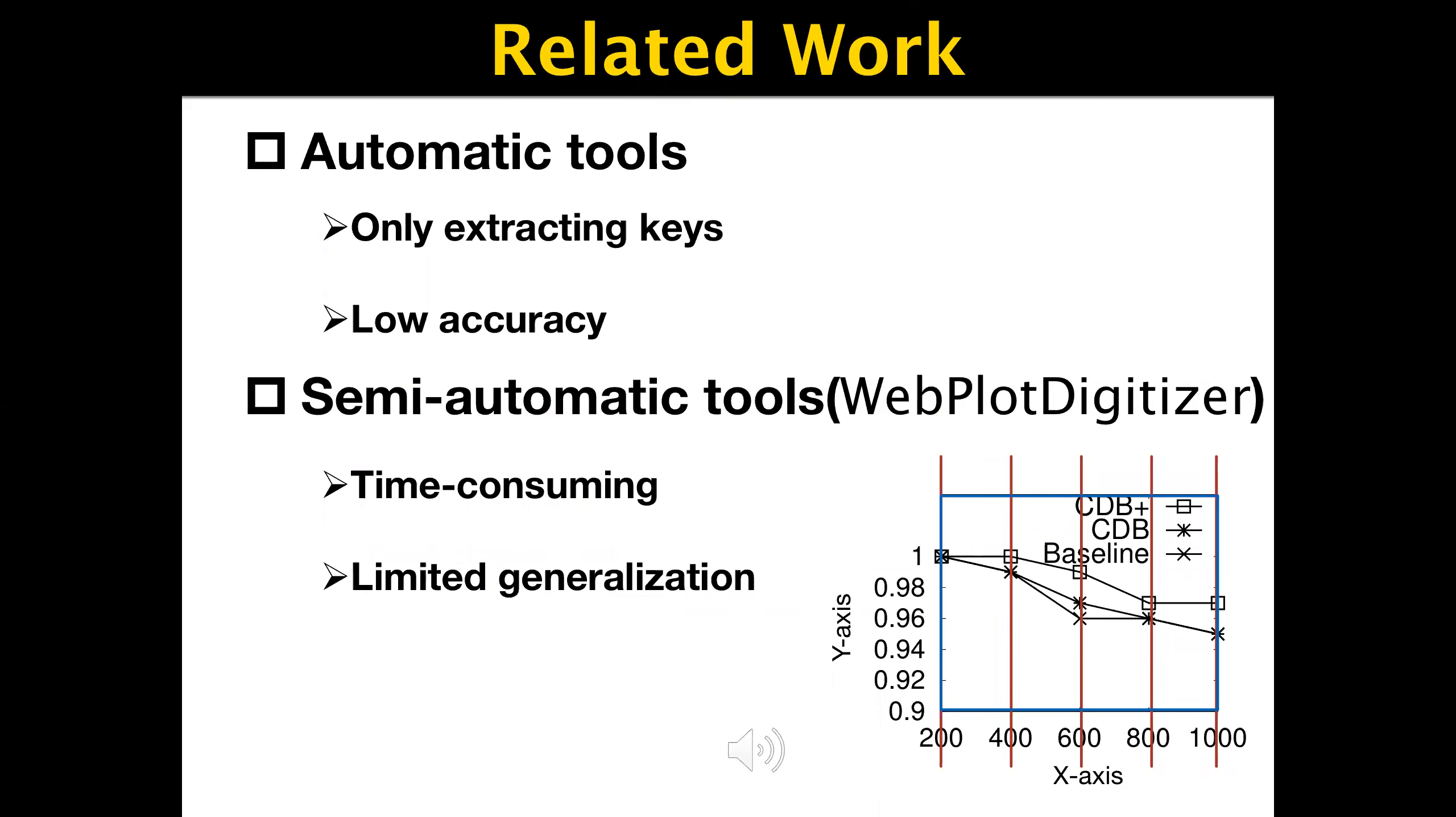Approaches for data extraction from charts can be categorized into two groups: automatic tools and semi-automatic tools. Some automatic frameworks only focus on extracting legend keys from charts. They generate edge maps, vectorize them, and utilize rule-based methods to extract keys. However, these works cannot obtain numerical data in charts. Moreover, accurate edge maps are hard to retrieve from real-world charts because of large variation in chart quality.